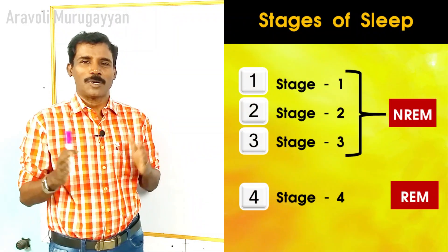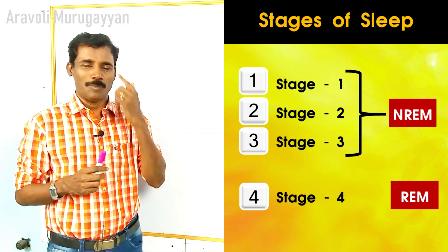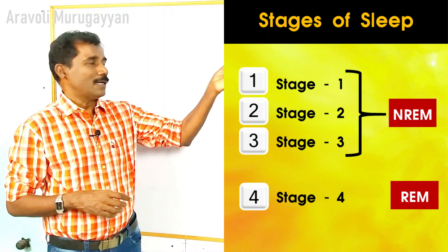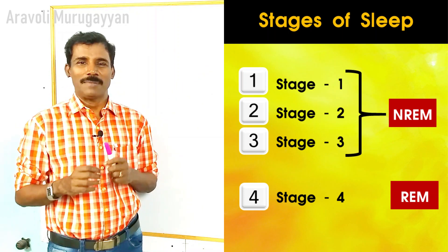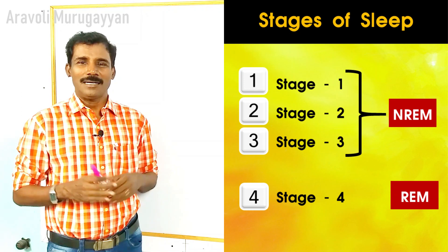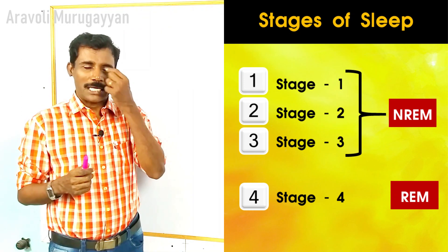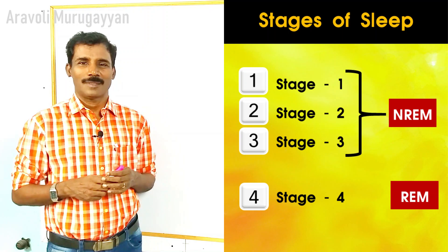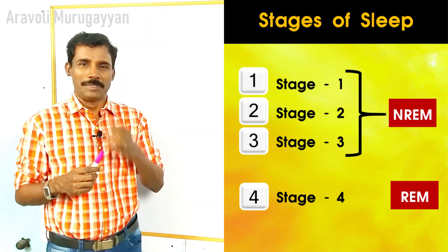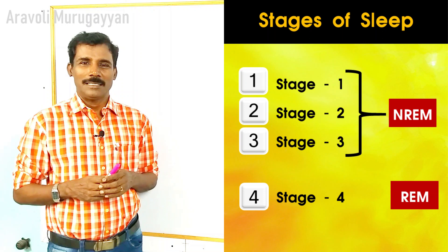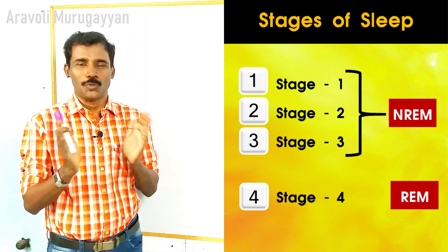The stages are broadly categorized into two types, based on eyeball movement. The first is non-random eye movement, where while you are sleeping your eyeball will not move. The second is random eye movement, where your eyeball keeps moving. Based on this criteria, sleep is divided into two groups.